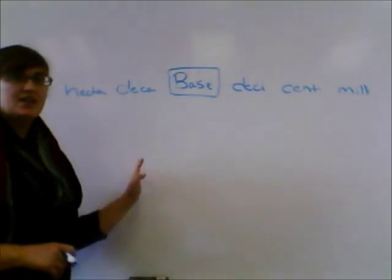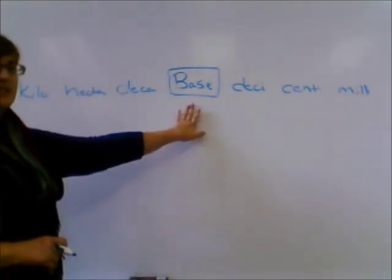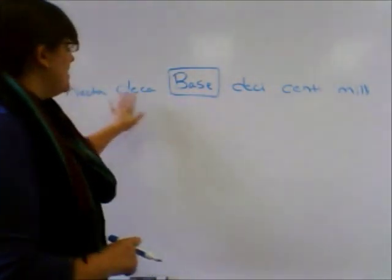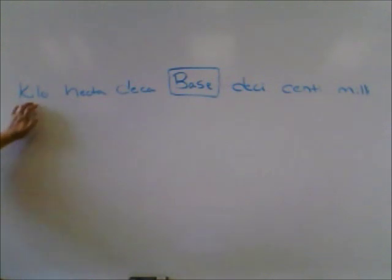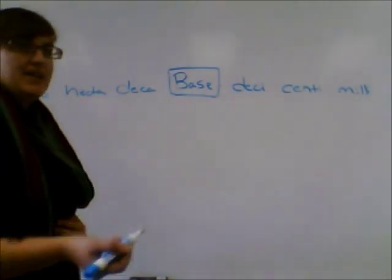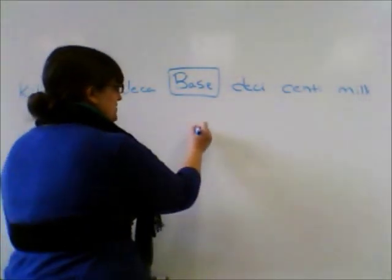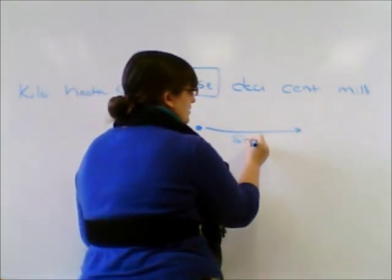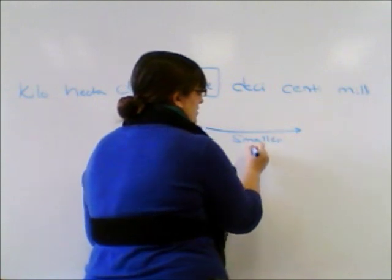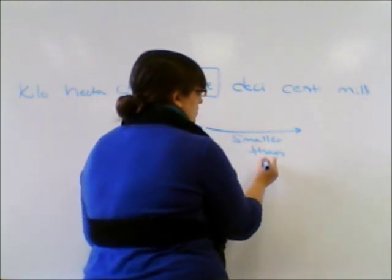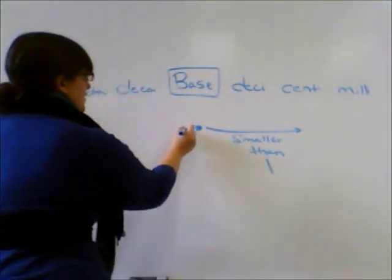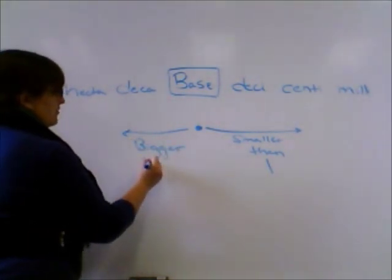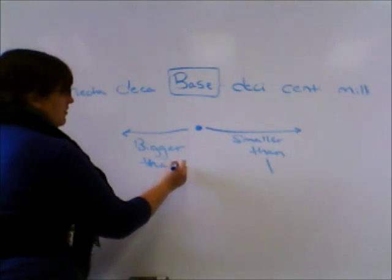Remember, the way we set it up is we start with our base in the center: deci, centi, milli to the right. To the left we have deca, hecta, and kilo. Now the way to think about this is you've got a decimal point here at your base. Anything to the right of the decimal is smaller than one. Anything to the left is bigger than one.